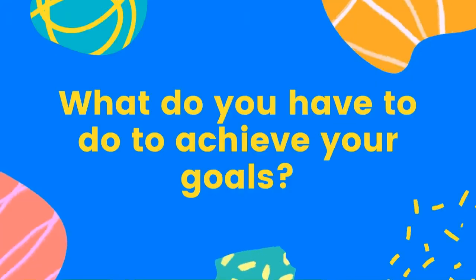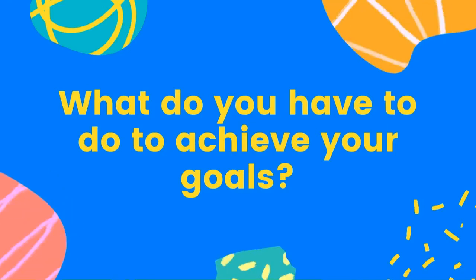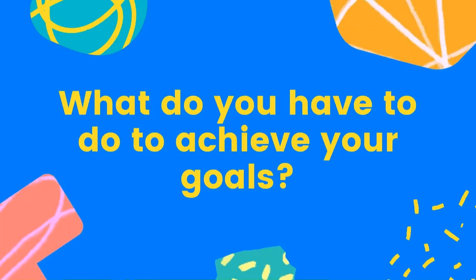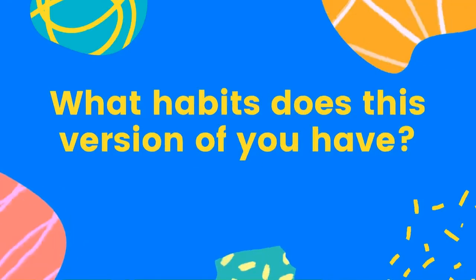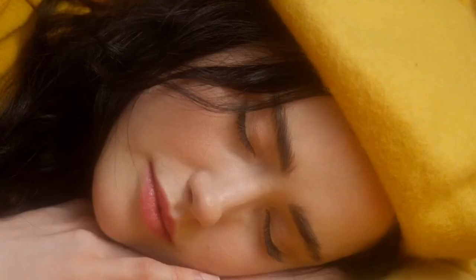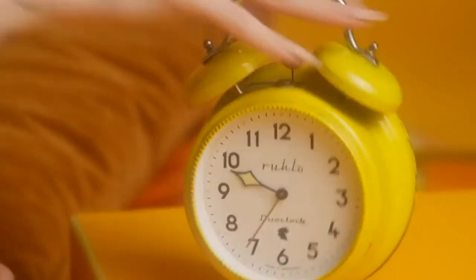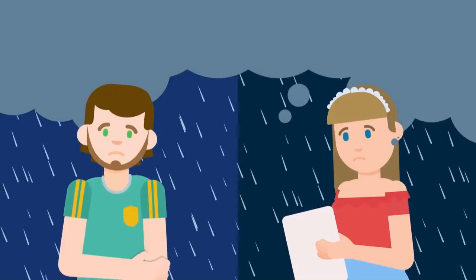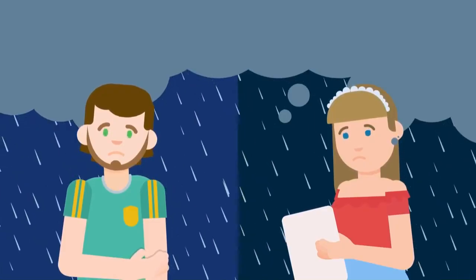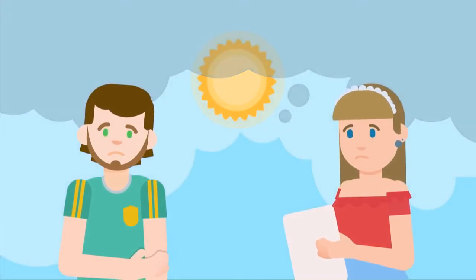Now that you have visualized this scenario in detail, what do you have to do to make sure you achieve your goals? What habits does this version of yourself have? Do they wake up early or sleep in? What kind of people do they surround themselves with? Try to focus on the positive feelings and avoid the negative ones.